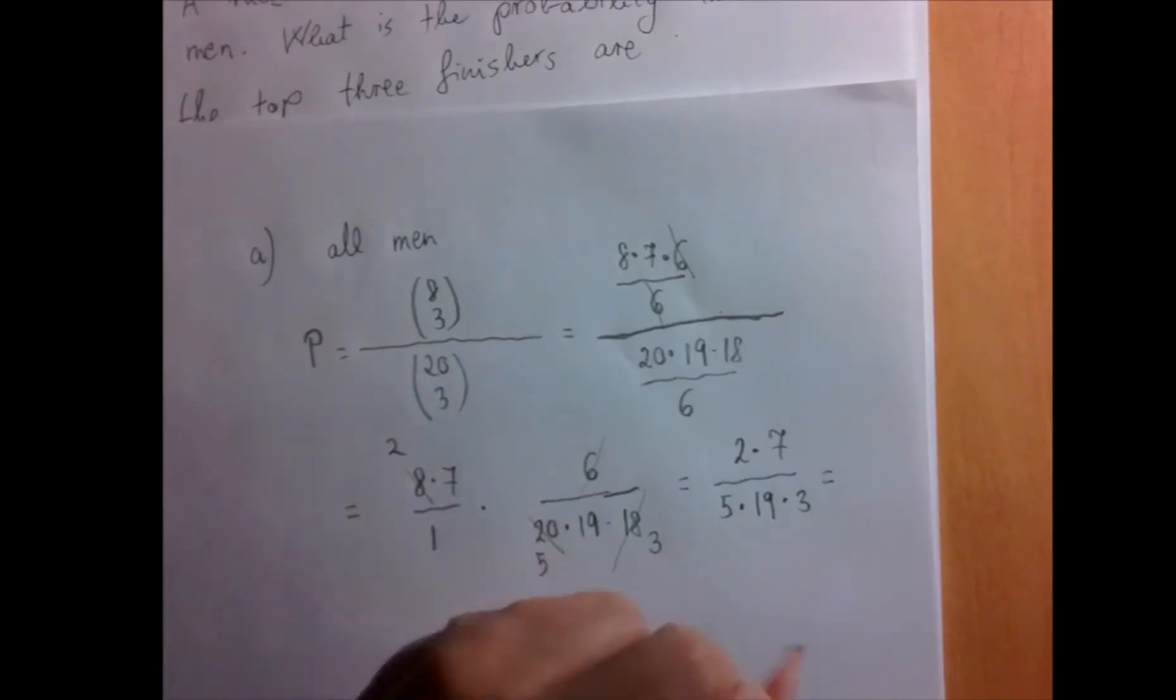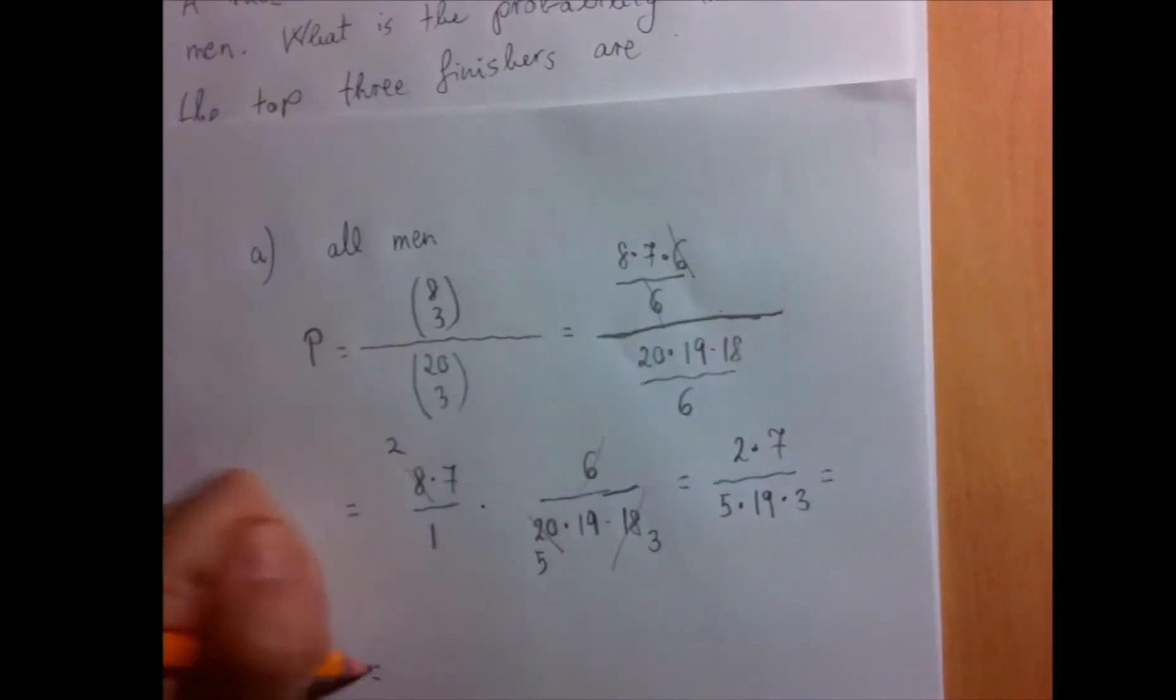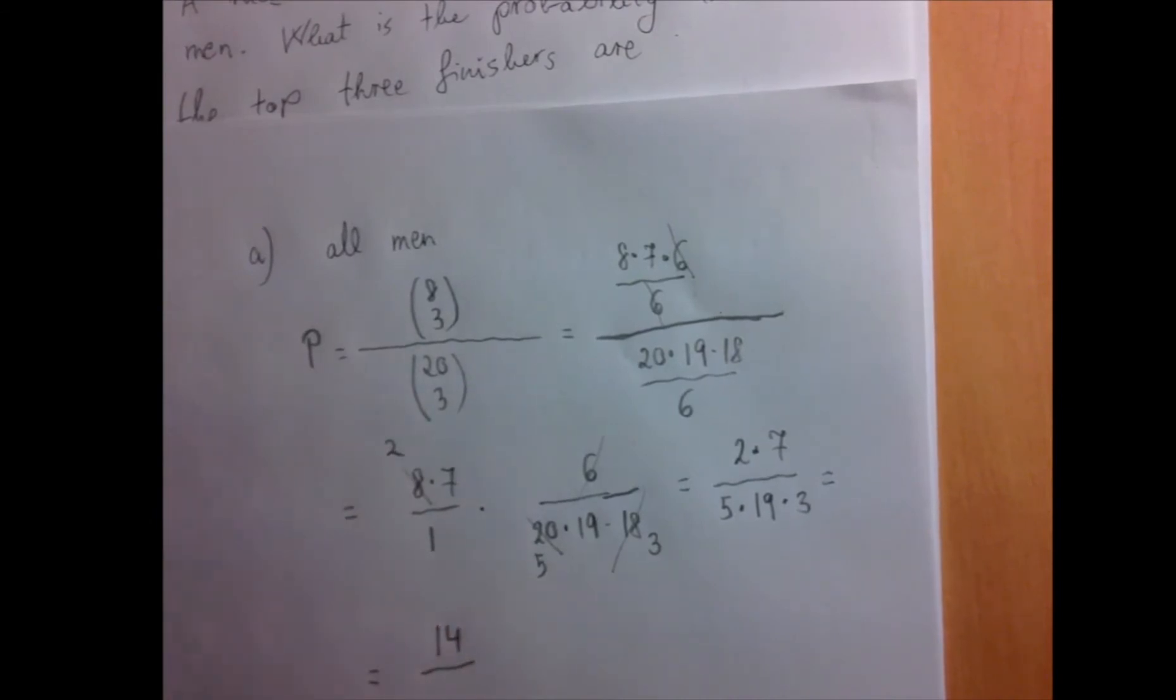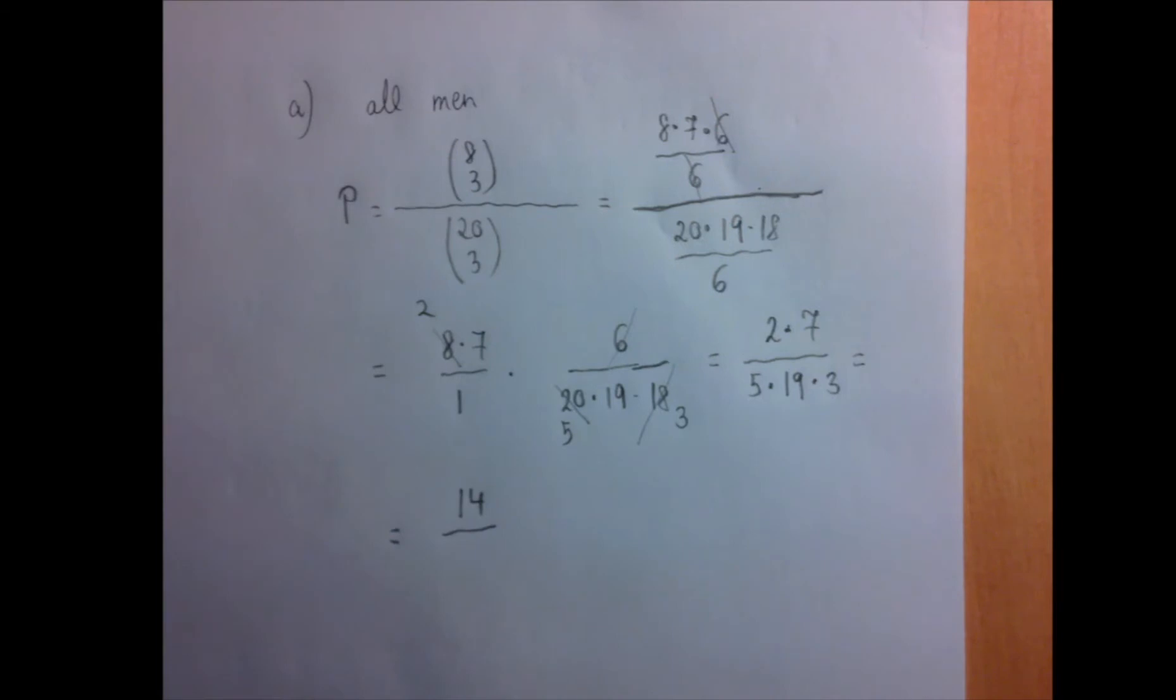And now there is nothing more cancellation left. So we have 14 divided by 15 times 19 is 285.